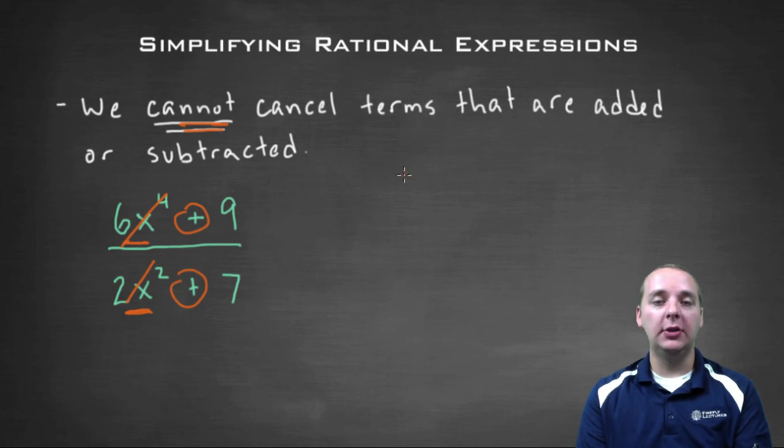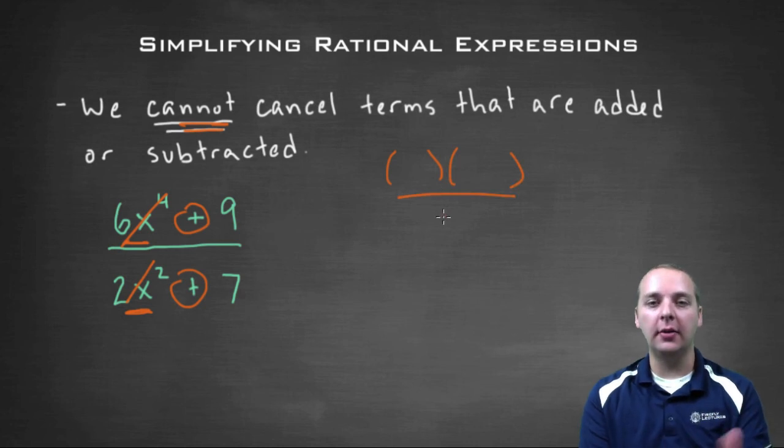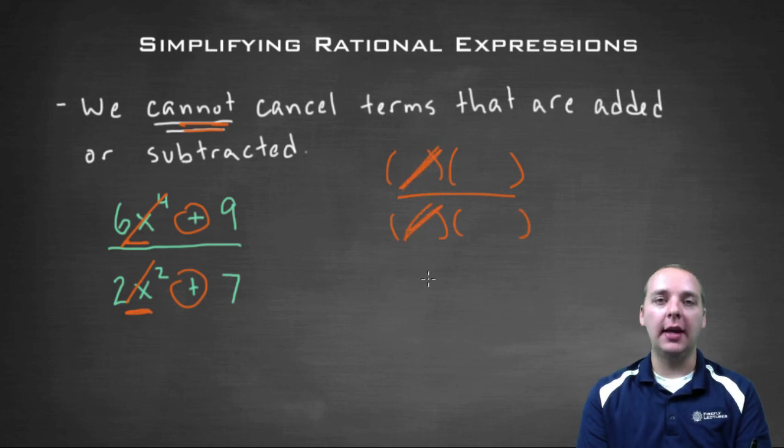So what you could try to do in a general situation is see if it factors, which means created as a product in the numerator and denominator. And then if you have any that are the same, you might be able to cancel some out.